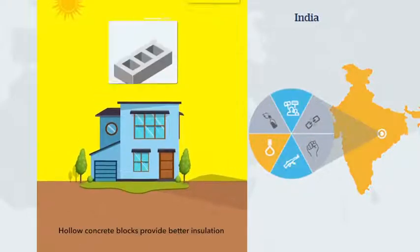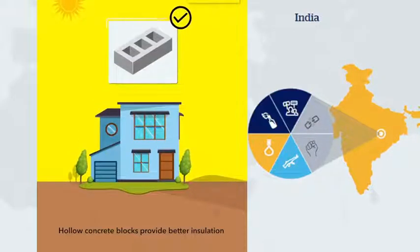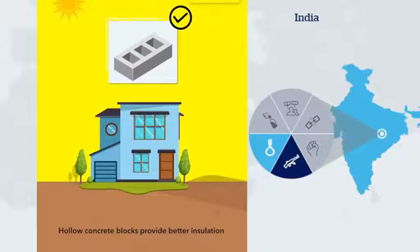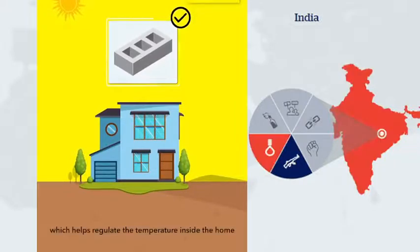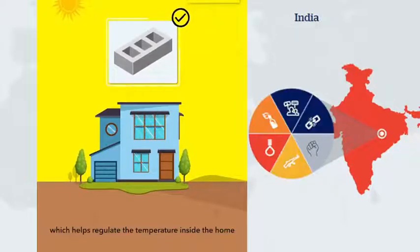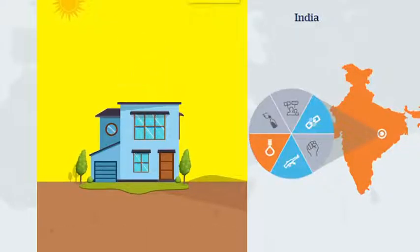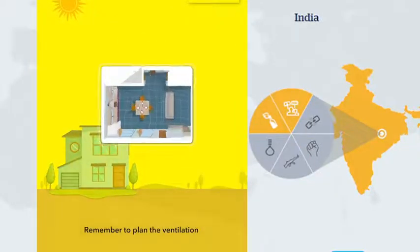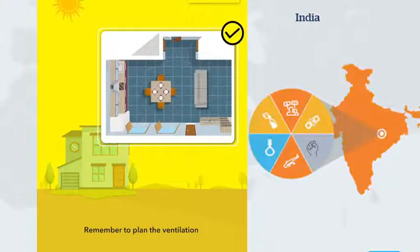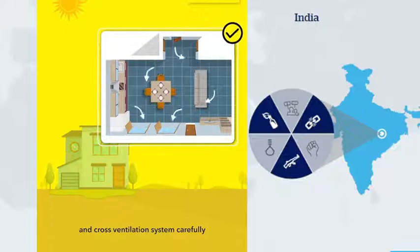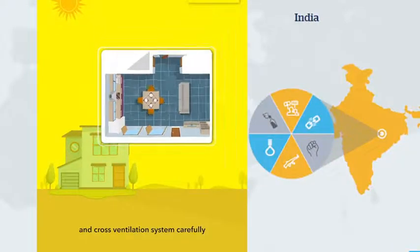Hollow concrete blocks provide better insulation, which helps regulate the temperature inside the home. Remember to plan the ventilation and cross ventilation system carefully.